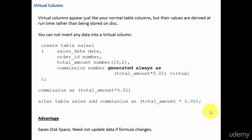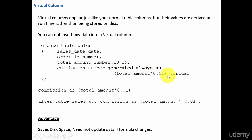Only the formula for that virtual column is stored on the database. At run time, Oracle Database takes that formula and calculates the values for you. There are two ways to create a virtual column. The first method is your column name, data type, and GENERATED ALWAYS AS the formula and the keyword VIRTUAL.